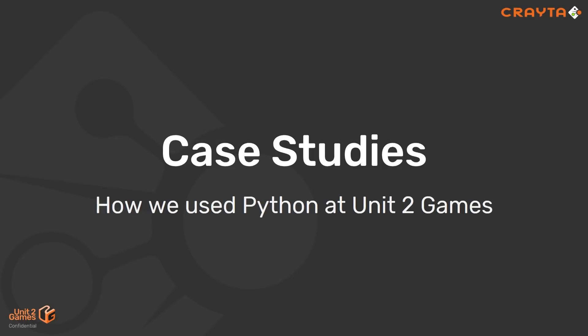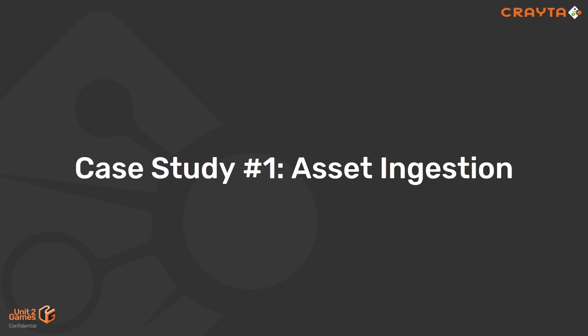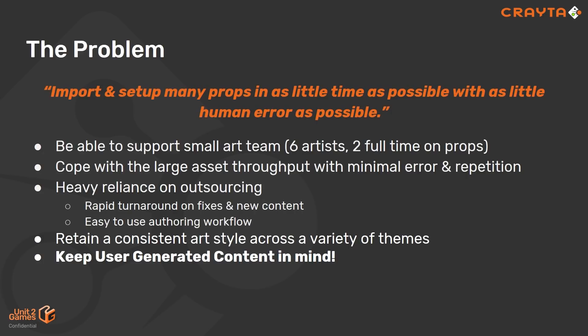We're going to look at a couple of examples of how we used Python at Unit 2. The first is how we ended up building our asset ingestion pipeline. Generally speaking, what you want to do is import and set up as many props in as little time as possible with as little human error as possible. We've only got 30 people at Unit 2 — six artists, and two of those are dedicated to props full-time. We have aspirations for a very large amount of assets in our game, so naturally we're relying quite heavily on outsourcing.